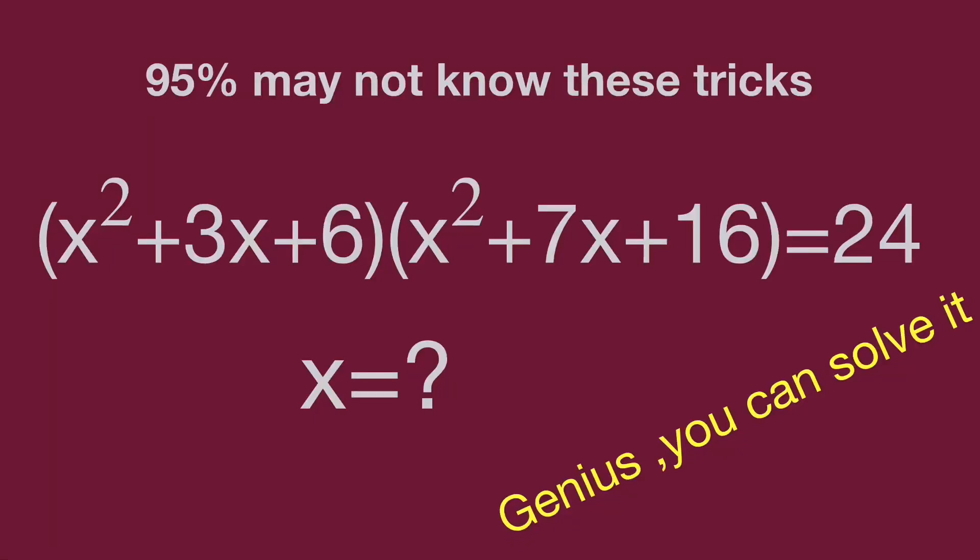Hello, you are watching Balahibo Math Genius. We have the equation: quantity x squared plus 3x plus 6, multiplied by quantity x squared plus 7x plus 16, equal to 24. Find the value of x.